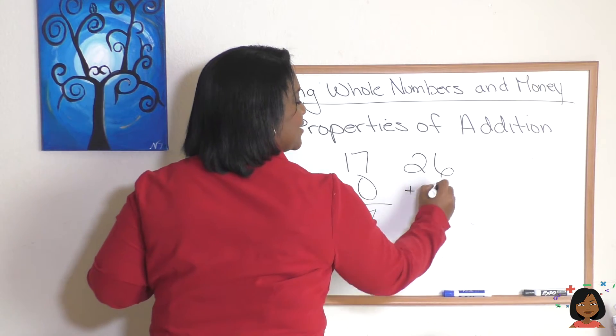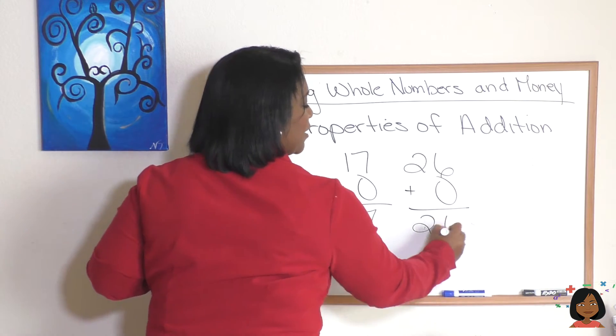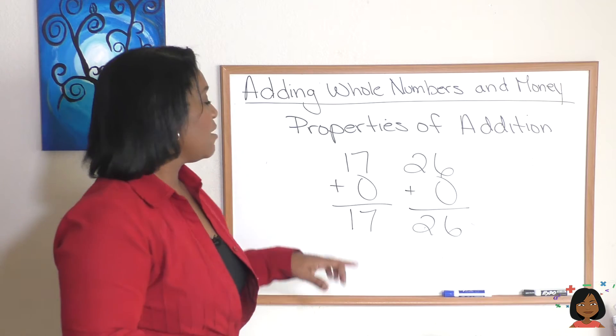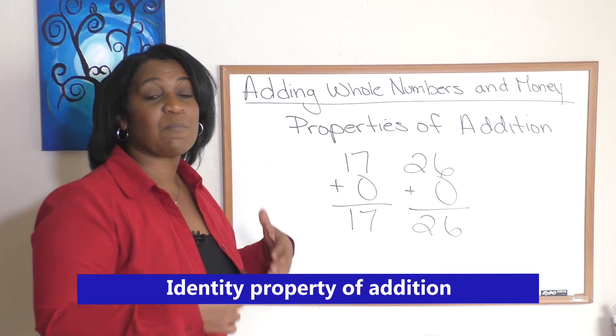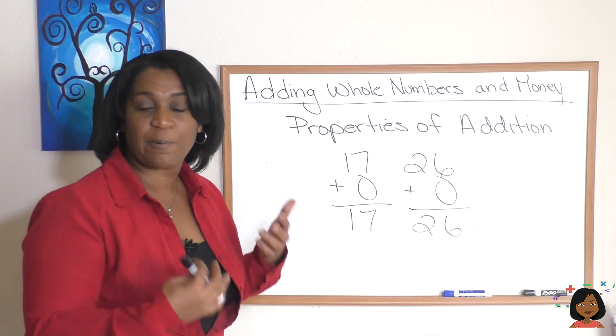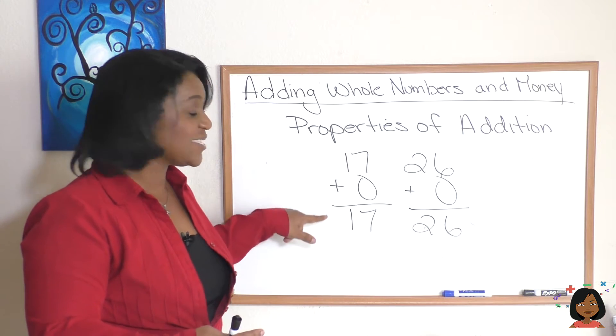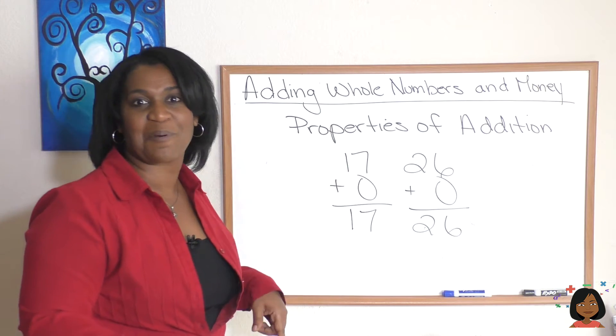So in math, zero represents the identity property of addition, meaning that when I add zero to a number, my sum is the identical number that I started with, which is where we get identity.